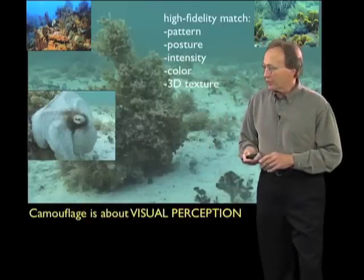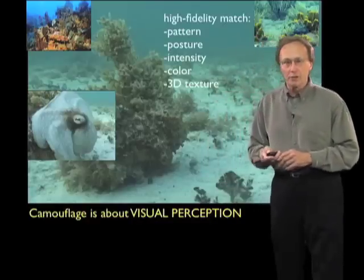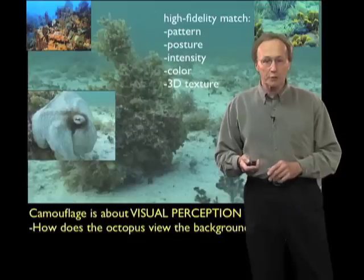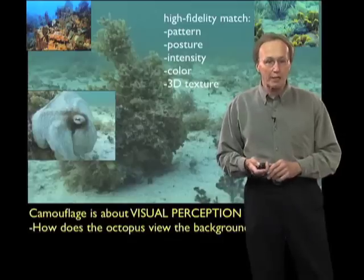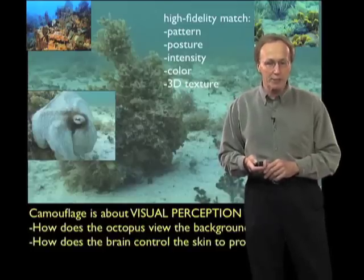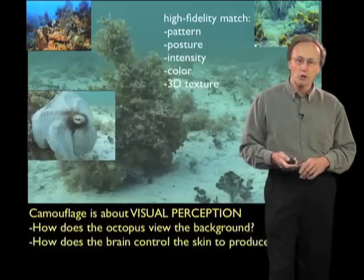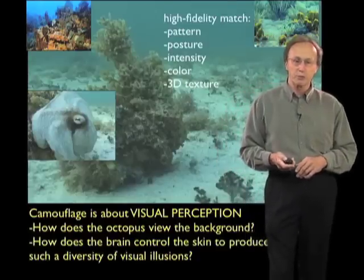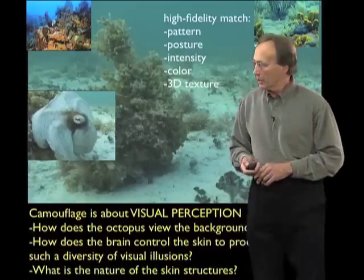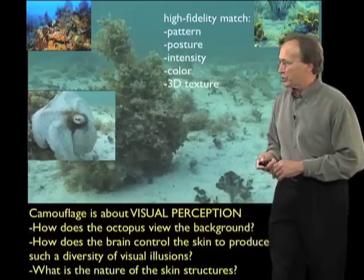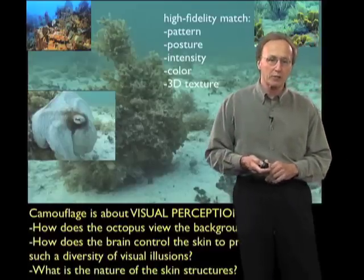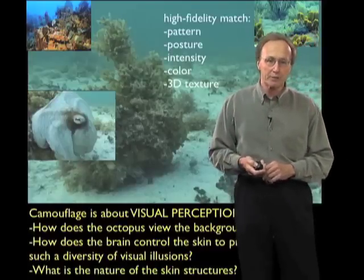Camouflage is about visual perception. How does the octopus view that background and make this complicated choice? How does the brain control the skin to produce such a diversity of visual illusions? There are many similar questions that one can ask relative to this behavior.